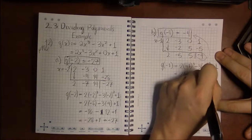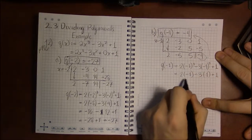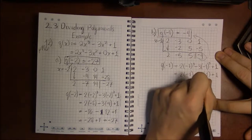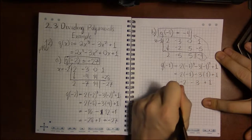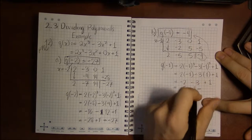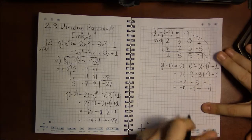Minus 1 squared is just 1. 2 times minus 1 is minus 2. 3 times 1 is 3. So minus 2 plus minus 3 is minus 5, plus 1. And that gets us a minus 4.